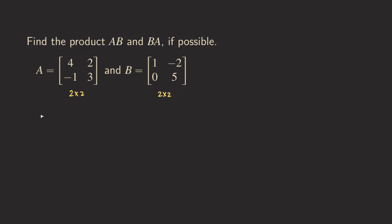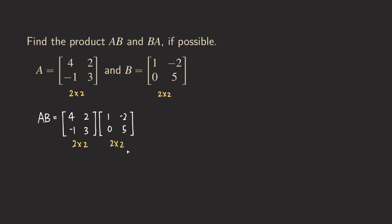First, if we want to find AB, we line them up side by side. When we see AB we put A first: 4, 2, negative 1, and 3. And then B: 1, negative 2, 0, and 5. The first thing we check is the size for each matrix. The first one is 2 by 2 and the second one is also 2 by 2. We need to make sure the inner numbers are the same so that we can do the multiplication. If they are not the same, we will not be able to multiply. Since they are the same, we can proceed.